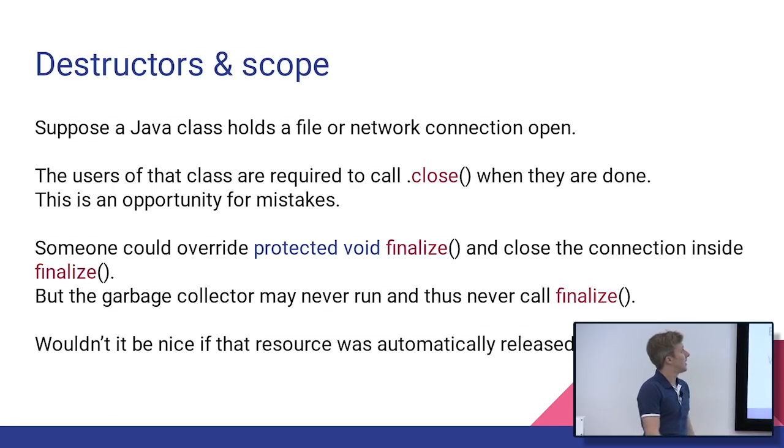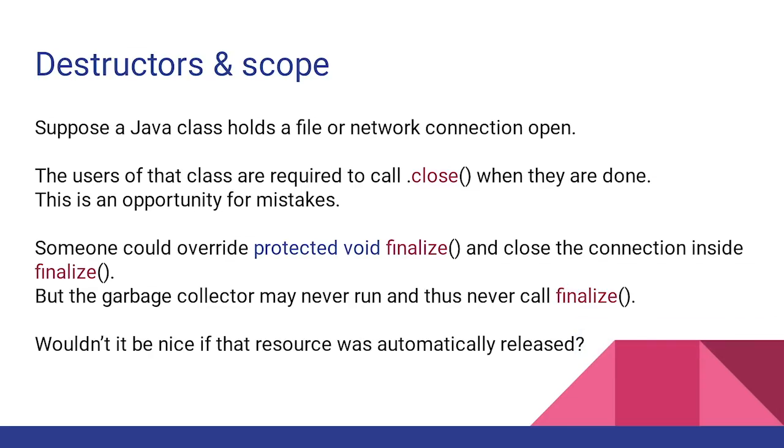OK, destructors and scope. So imagine we're in Java land, and we have a class that represents some sort of resource, like a network connection or a database connection file, something like that. We don't have deterministic destruction in Java, which means if I am currently using this file, and then I'm done with it, and I get rid of my reference, the reference is still in memory until garbage collection happens. I don't know when garbage collection is going to happen. It might never happen. And so I don't actually know when the destructor is going to get called, so it may never actually release the resource. That's kind of a problem.